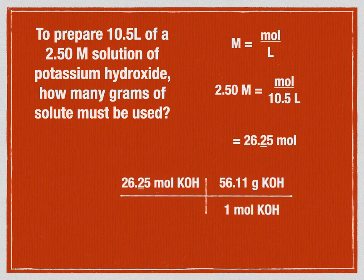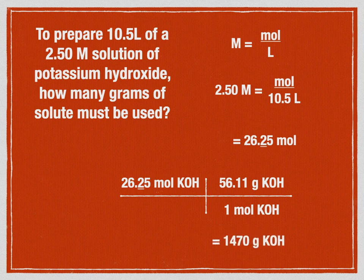Here's the game board: 26.25 moles times the molar mass of 56.11 g/mol. Multiplying across, we find it's going to take just shy of one and a half kilograms of potassium hydroxide to make this solution.